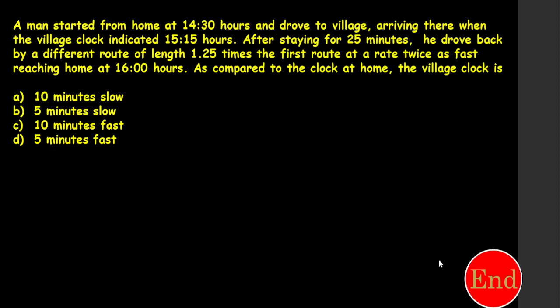How many of you got the answer? Try to give it in the options. A man started from home at 14:30 hours and drove to a village, arriving when the village clock shows 15:15. After staying for 25 minutes, he drove back by a different route of length 1.25 times the first route, at twice the speed, reaching home at 16:00 hours.